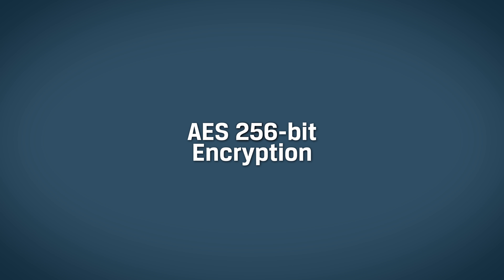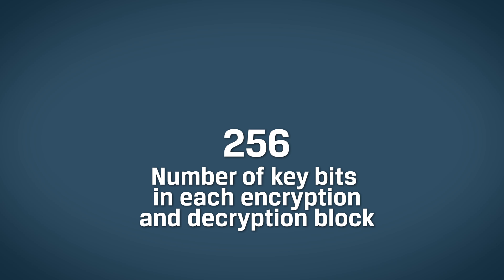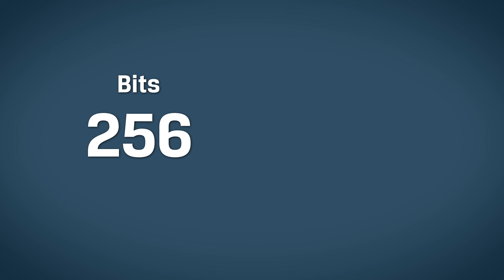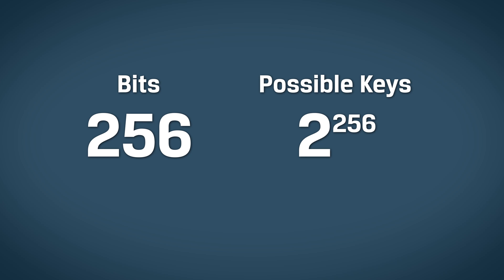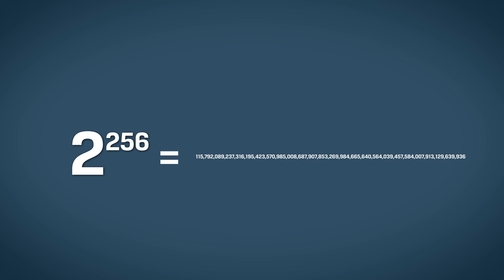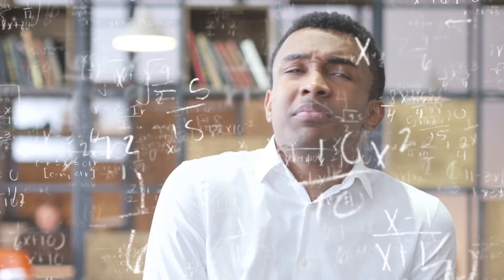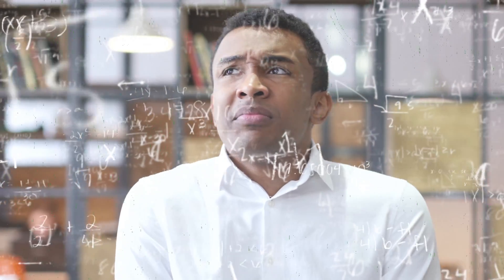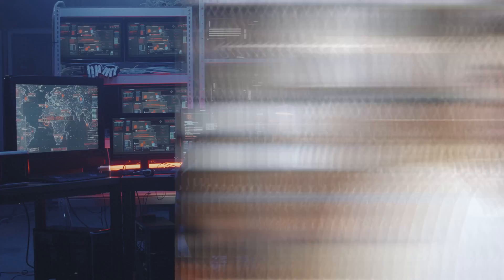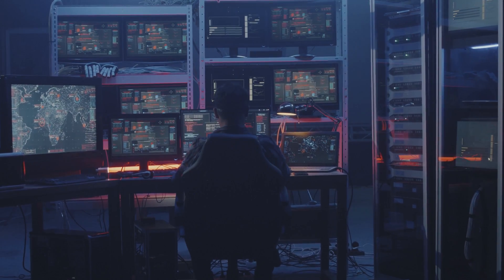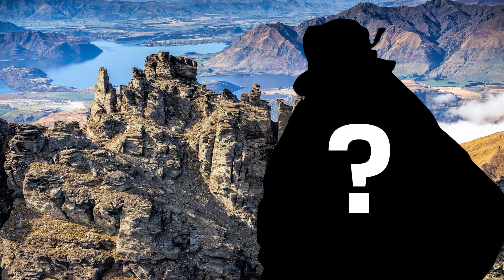Think of it this way: the numbers after AES represent the number of key bits in each encryption and decryption block. For each added bit, the number of possible keys doubles, meaning 256-bit encryption is equal to 2 to the 256th power. Each key bit also has a number of different rounds — the process of turning plain text into ciphertext. For 256 bits, there are 14 rounds, so the chance of a hacker coming up with the correct sequence is even less likely than Tom Bombadil ever showing up in a Lord of the Rings flick.